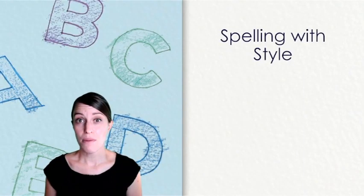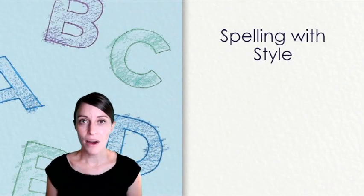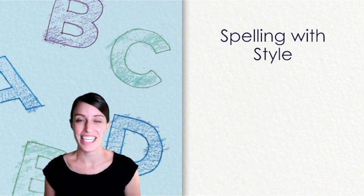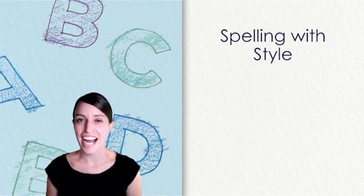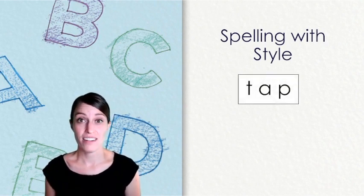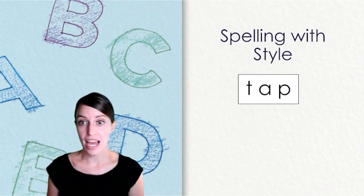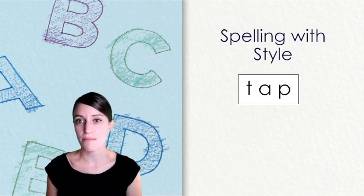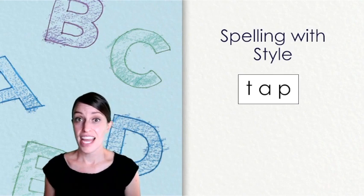We just practiced reading silly words. Now we're going to spell silly words. We're going to do this by using any kind of voice that you want. Here is our first word. When I look at that word, I'm going to say the name of each letter to spell it. T-A-P.